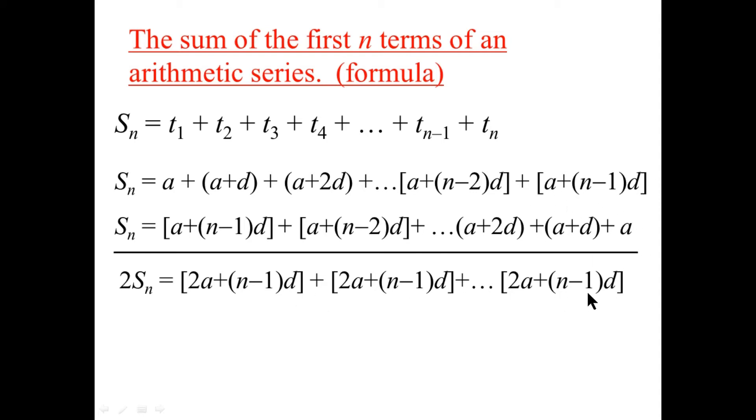In each case, just like those 101s, we're going to get 2A plus N minus 1 times D. The question is, how many of these square brackets do we have? Well, if we look up here, we can see that we're going to have N of them. N of them. That's how many.